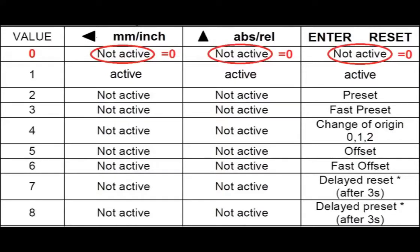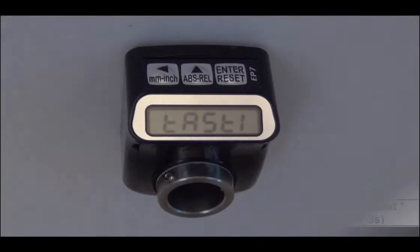For our example, we will disable the reset, the absolute to relative value conversion, and the millimeter to inch conversion buttons in the user mode. The chart shows the required value of zero for each digit in the code for making the keys inactive, so we will enter the code 000.